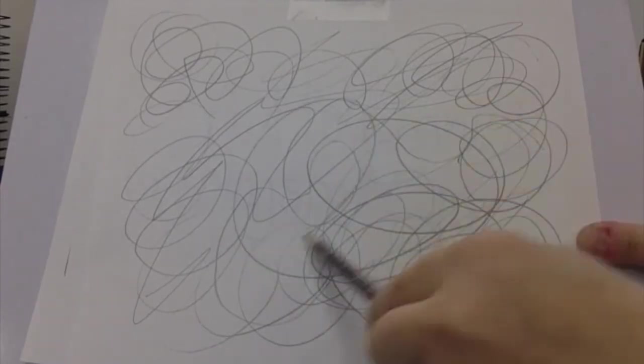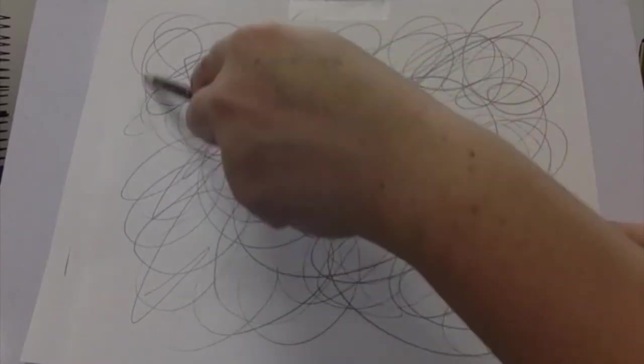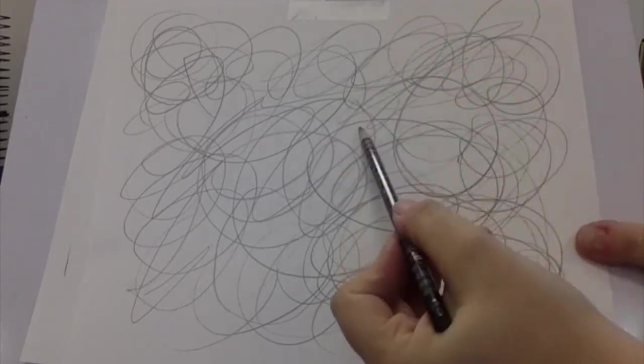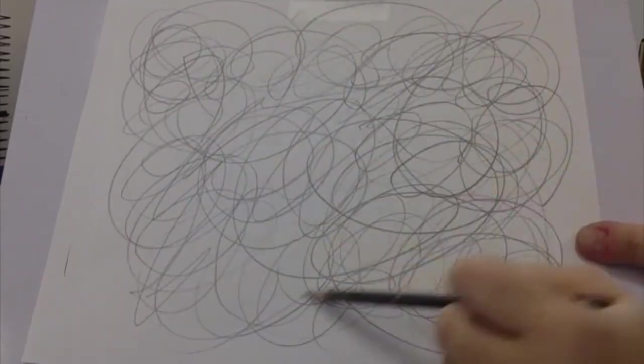What I do is I just have them fill their entire paper. If I see some students moving slow, I will encourage them to move faster because then they're planning too much. I have the students scribble on their paper until I start counting down three, two, one, stop. And then everyone in the class stops scribbling.